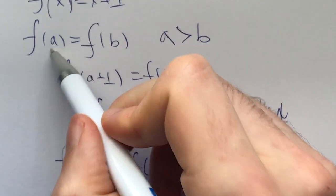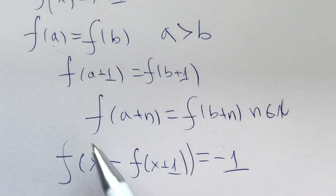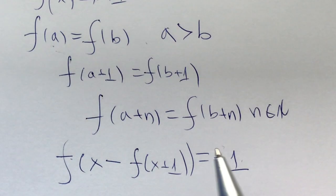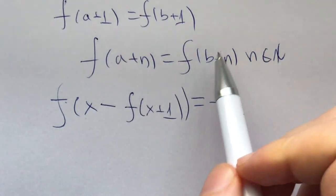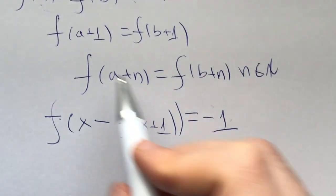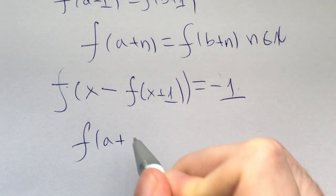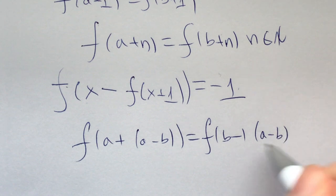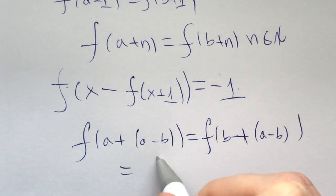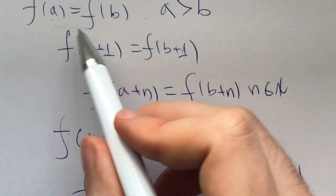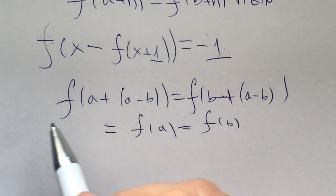So now, if f of a equals f of b — i.e., if f is not an injection — then f of a plus n equals f of b plus n for all natural numbers n. Plugging in n equals a minus b, we get f of 2a minus b equals f of a equals f of b. In other words, starting from values a and b, we get that this function is periodic with period a minus b.